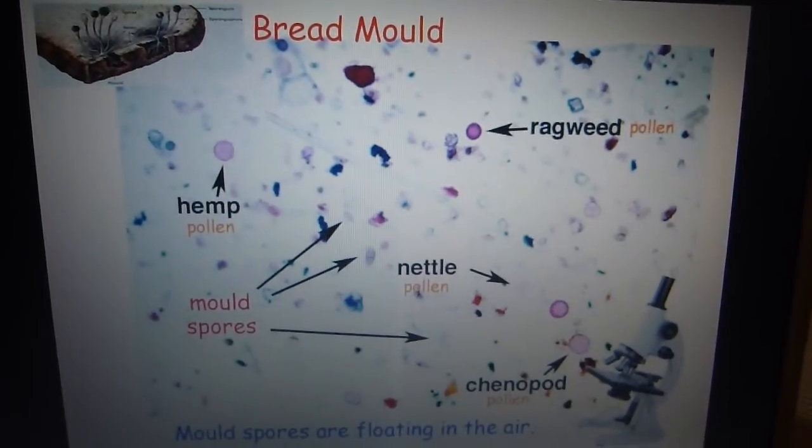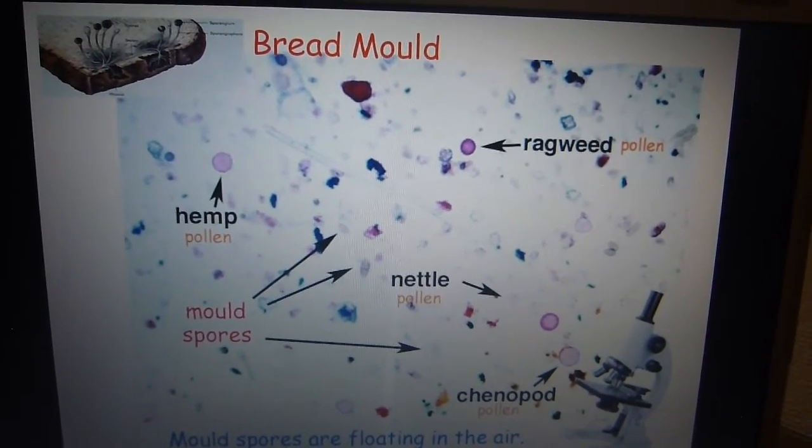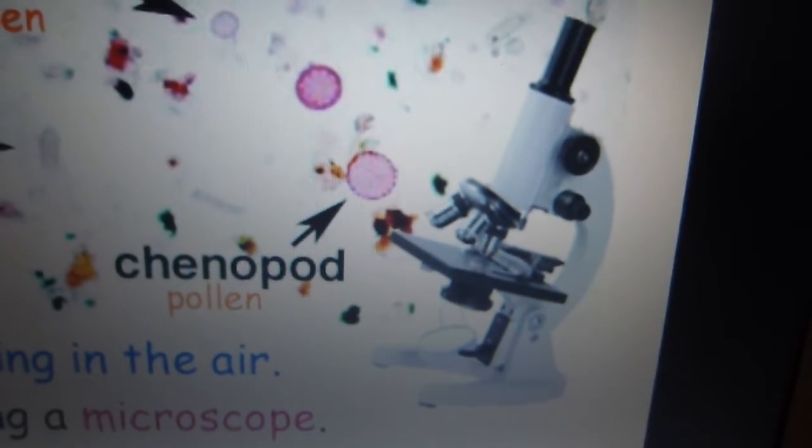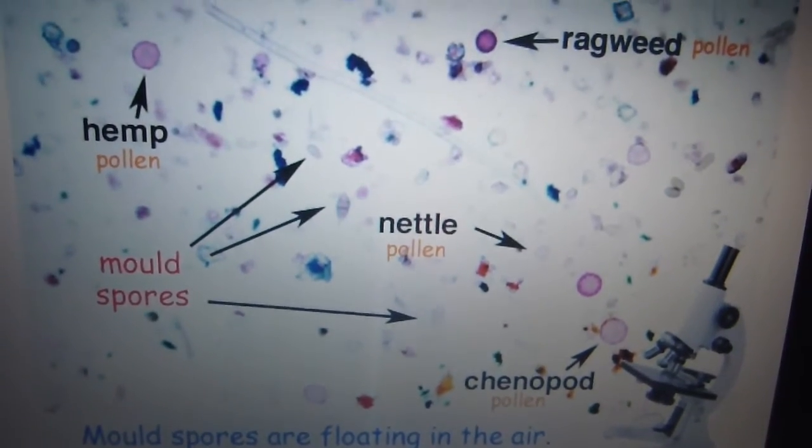Bread mold. Most spores are floating in the air. They can be seen using a microscope. You can see some mold, spores and pollen in the air.